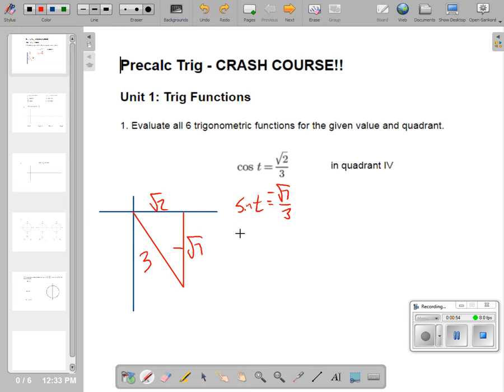Next up, I need to find the tangent of T. So the tangent is opposite adjacent. That'd be negative radical seven over radical two. And you have to rationalize that. So this is negative radical 14 over two. Now I have the tangent. I've got cosine, sine, and tangent. Now I need their reciprocals.